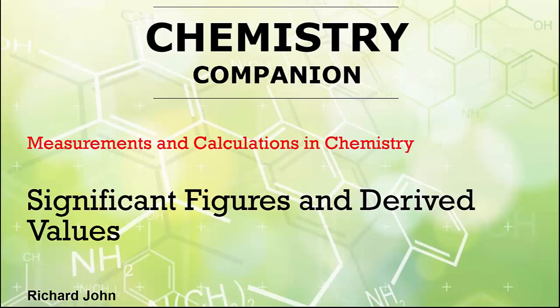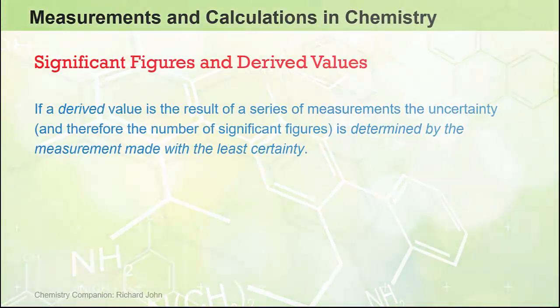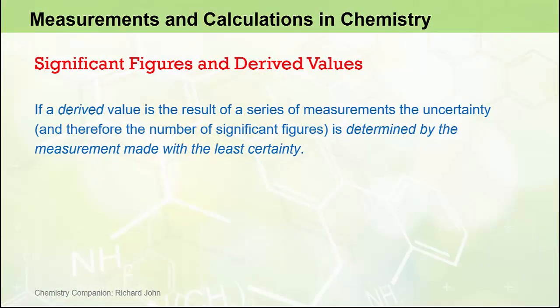In this video, we look at how we determine the uncertainty in a measured value if the value is mathematically derived from a series of two or more measurements. A general rule of thumb to remember is that if a derived value is the result of a series of measurements, the uncertainty and therefore the number of significant figures is determined by the measurement made with the least certainty.